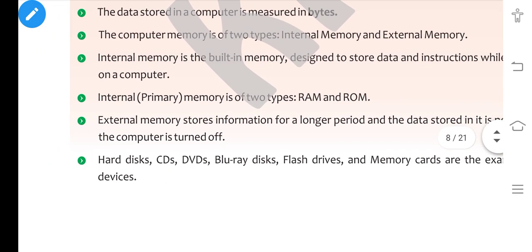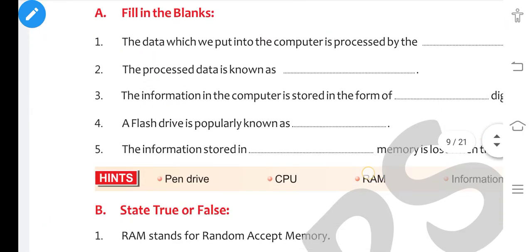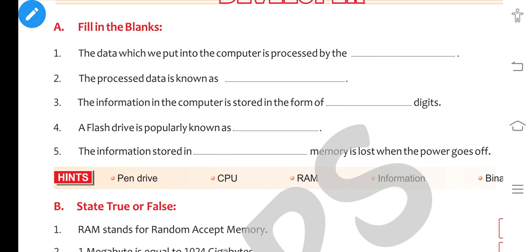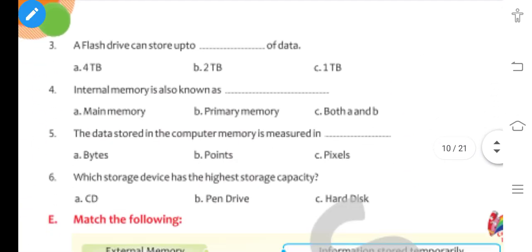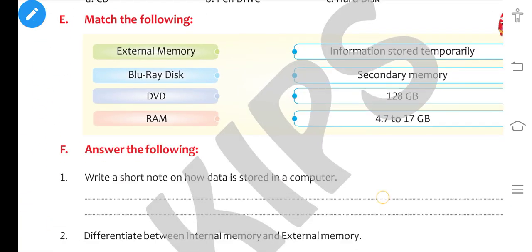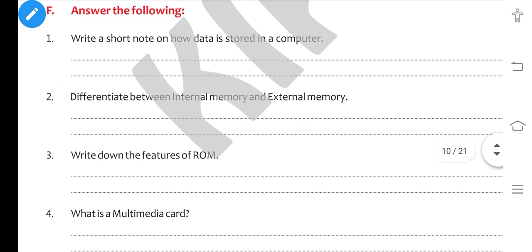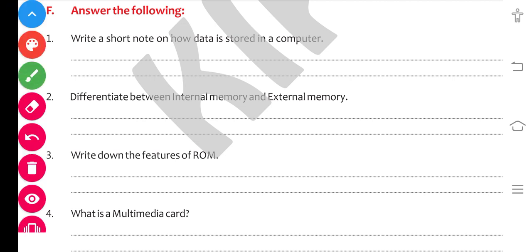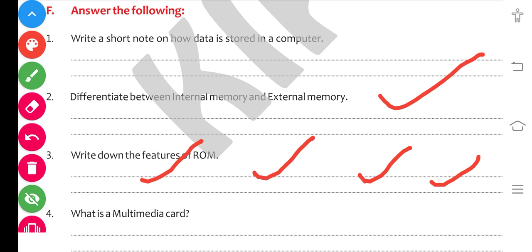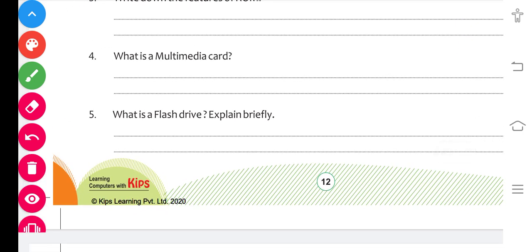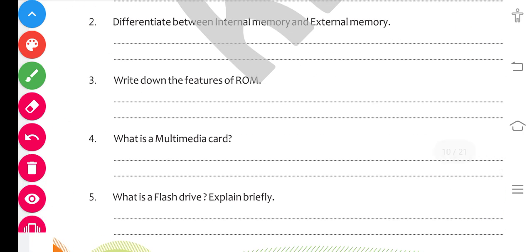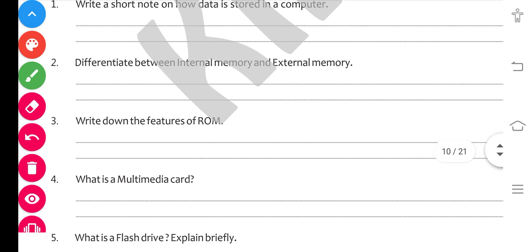Now you have to do the book exercises: fill in the blanks, multiple choice questions, match the following, and answer the following questions. The answer-type questions include: the difference between internal memory and external memory, what is a flash drive, and write down the features of ROM. Thank you.